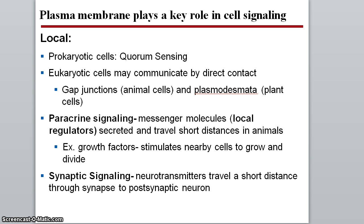Cell communication can be local or long-distance. In local cell signaling, different cells do different types of signaling. Prokaryotic cells go through a process called quorum sensing. Eukaryotic cells can communicate by direct contact using gap junctions or plasmodesmata in plant cells. They could use paracrine signaling, sending message molecules short distances to nearby cells — growth factors are a great example. Synaptic signaling is another example, where neurotransmitters travel through the synapse to the next neuron.